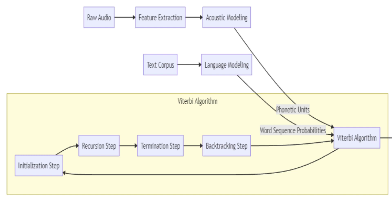Let's dive into the Viterbi algorithm and its application in the Kaldi toolkit. The Viterbi algorithm, named after Andrew Viterbi, is a dynamic programming algorithm used for finding the most likely sequence of hidden states in a hidden Markov model, given a sequence of observations. The hidden states represent the underlying process that generates the observations, but we cannot directly observe them. Hence, the goal is to uncover the best sequence of hidden states that led to the observed data.